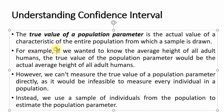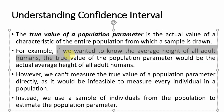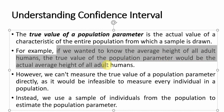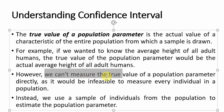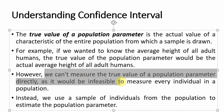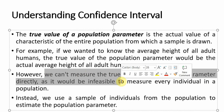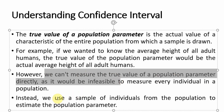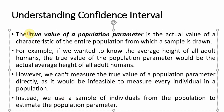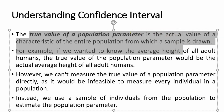The true value of the population parameter is the actual value of the characteristic of the entire population from which the sample is drawn. For example, if we wanted to know the average height of all adult humans, the true value would be the actual average height of all adult humans. But the problem is we cannot measure this directly as it would be infeasible, so we use our sample to estimate it through confidence intervals.